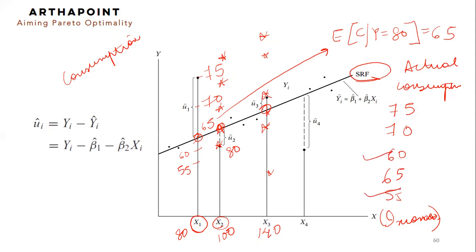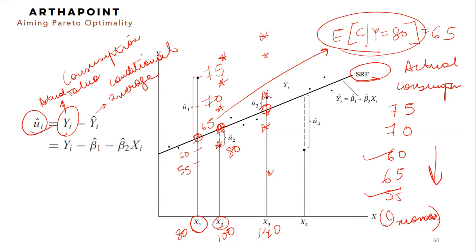So the actual levels of consumption could be below the expected value because expected is average. When I talk about average, some values have to be below it and some values have to be above it. So the actual value of consumption can either be below it or above it. So I say that this is what the average is, conditional average. And this is what the actual value is.